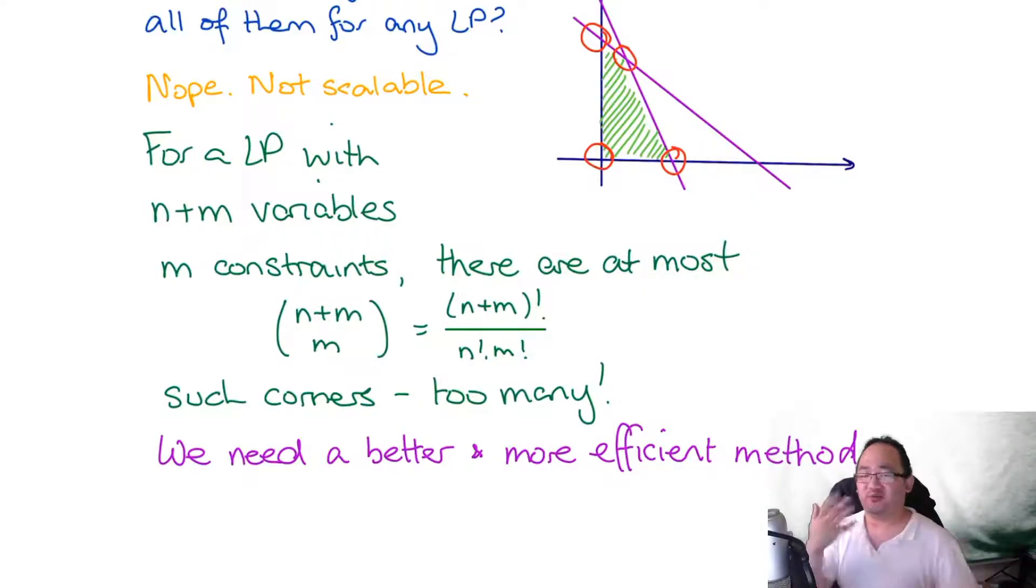This is where we segue into the simplex method. It performs better than the graphical method because at each and every step of the simplex method, the solution will always improve. That way we don't have to check all the solutions - we can just make sure we're always choosing a solution that's better than the last one. We'll look at the simplex method in the next video.